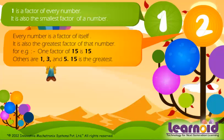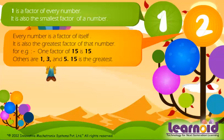For example, one factor of 15 is 15. Others are 1, 3, and 5. 15 is the greatest.